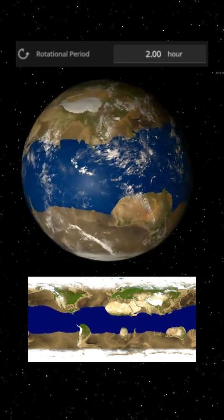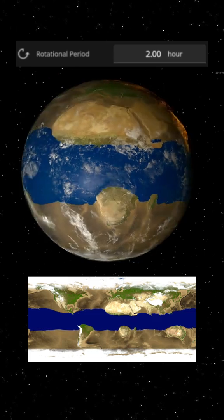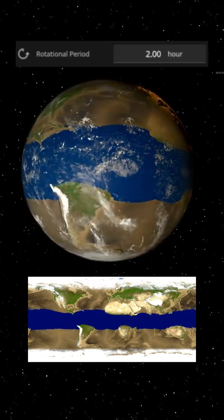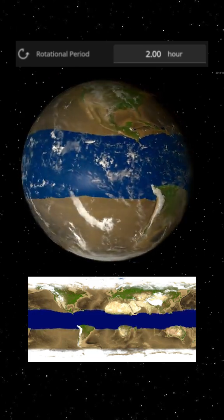As our planet spins faster, the consequences would be catastrophic. The rapid rotation would generate extreme winds with speeds exceeding 1,000 miles per hour.